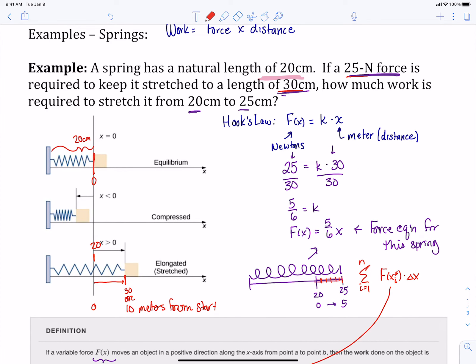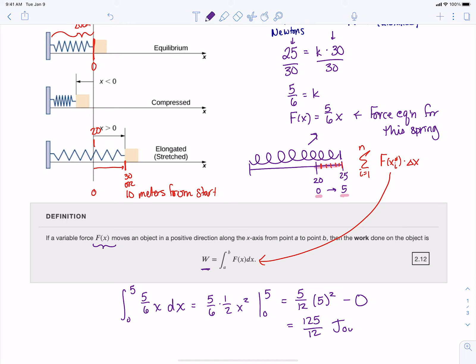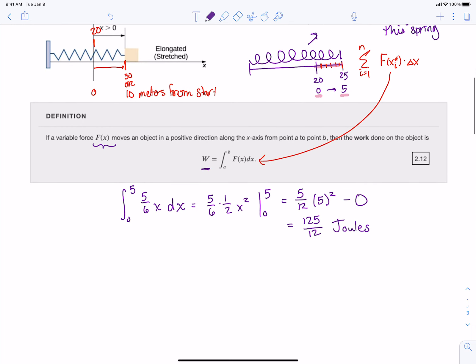Back to our question, we need to answer how much work is required to stretch it from 20 to 25. That's taking it from its natural length going out five centimeters. We are going to have the integral from zero to five of our force equation, and then dx. This is a pretty straightforward integral that we can do, and we'll get 5/12 times 5 squared minus zero, and that's going to give us 125/12, and this is going to be in joules. The work that we get is in joules.